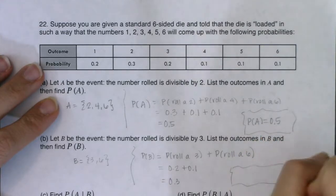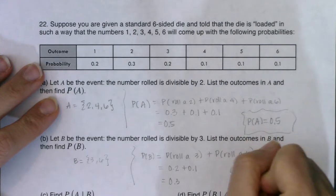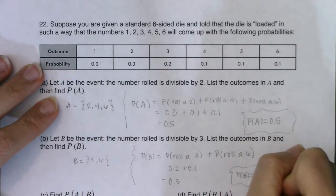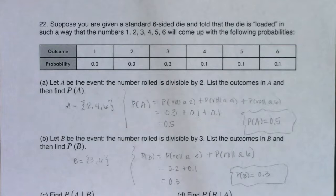So let me just write these numbers here. We've got the probability of event B being 0.3. All right, so we got parts A and B done.